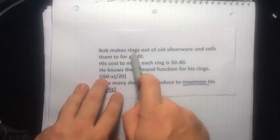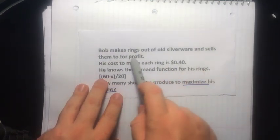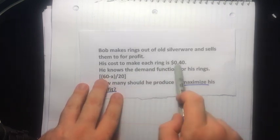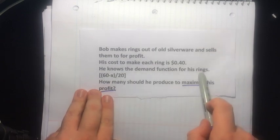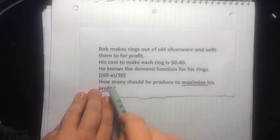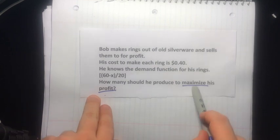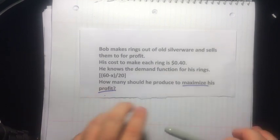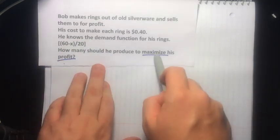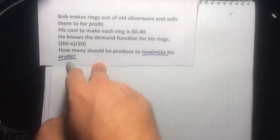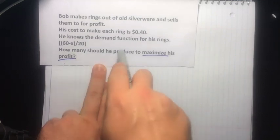Bob makes rings out of old silverware and sells them for profit. His cost to make each ring is $0.40. He knows the demand function for his rings, which is [(60-x)/20]. How many should he produce to maximize his profit? So we've got a couple of things going on here.